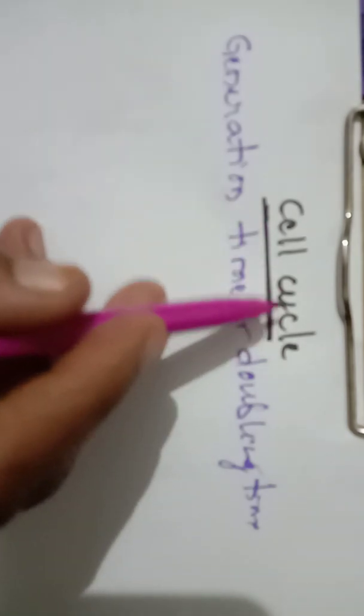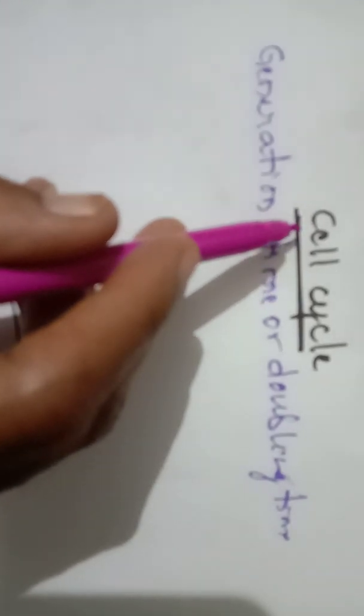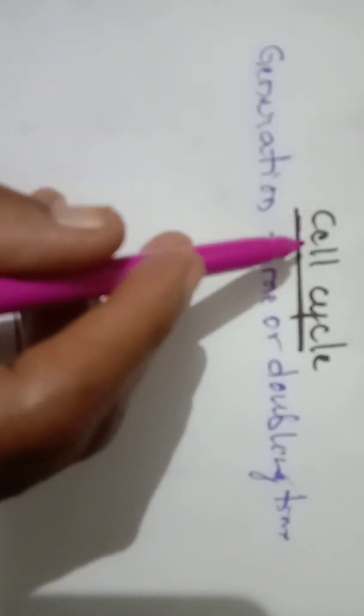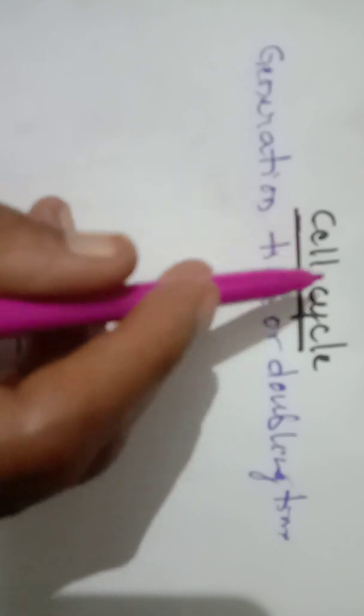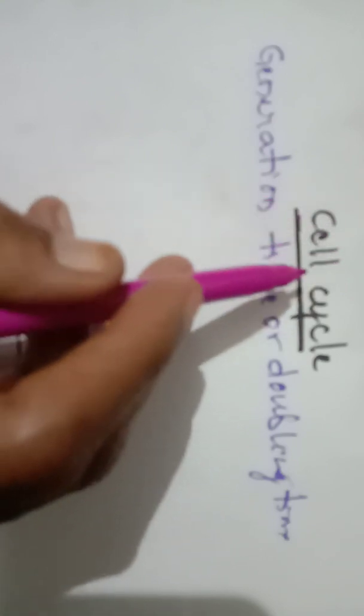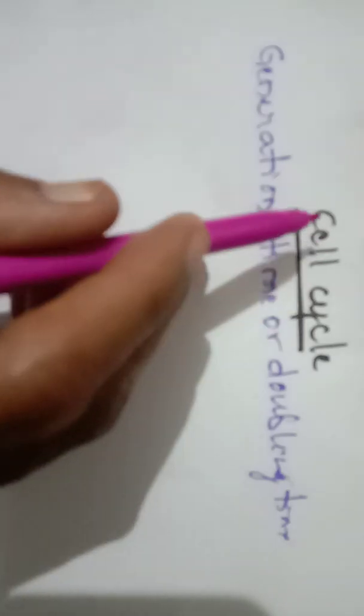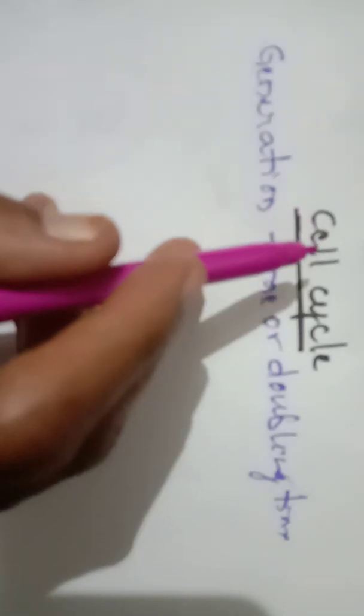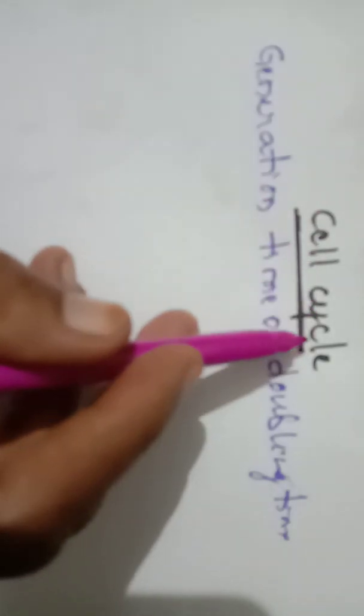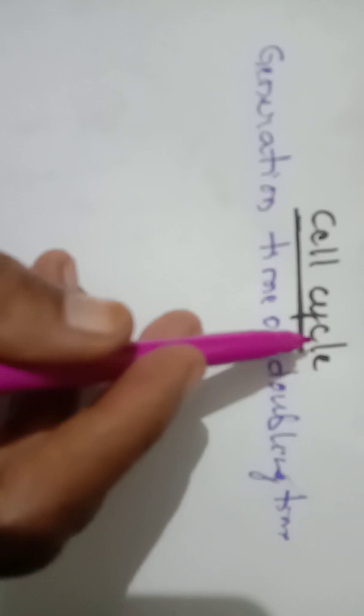So what is the cell cycle? There are two terminologies: one is the cell, another is the cell cycle. Cell is nothing but the biological cell — not your electrical cell or your mobile cell. Cell here means any living cell. So cell cycle means it is all the sequence of events — it is nothing but a generation of a cell.